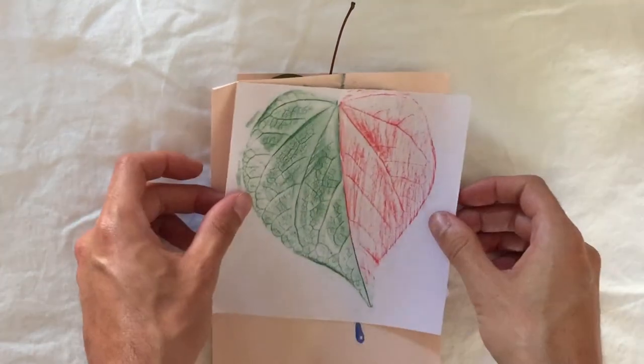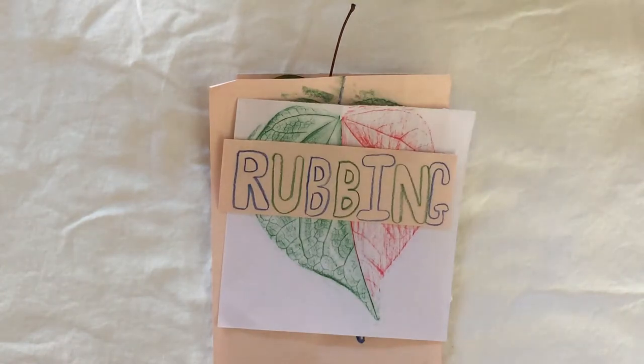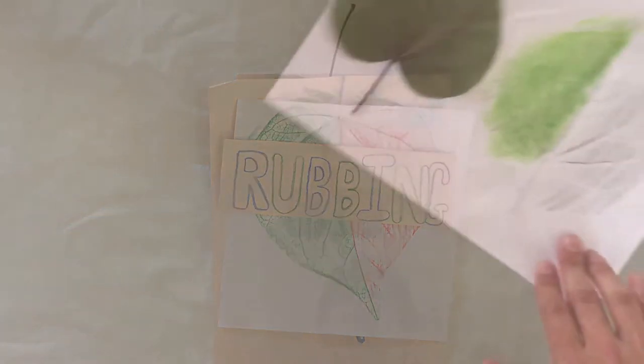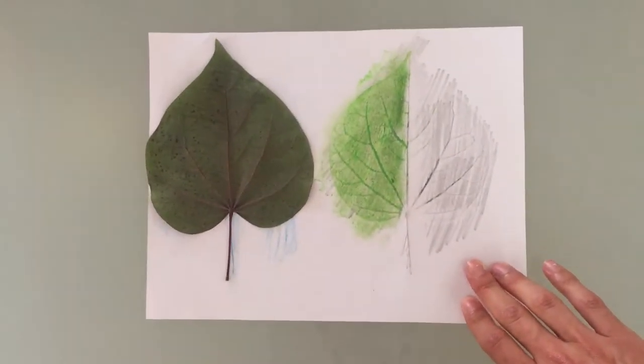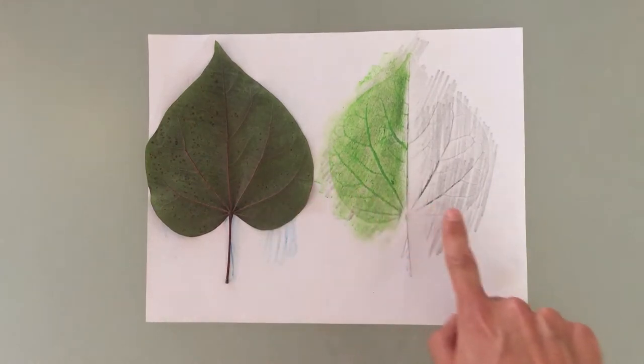Today, we are going to learn a printmaking technique called rubbing. Using crayons and other writing utensils, we can make an exact copy of a flat object, like a leaf or flower, on paper.